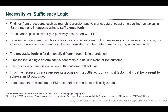Along this logic, a single determinant such as political stability is sufficient but not necessary to increase an outcome. The absence of a single determinant, such as political stability, can be compensated by other determinants — for instance, by a low tax burden — if you are considering a multiple regression model. The necessity logic is fundamentally different from this interpretation.